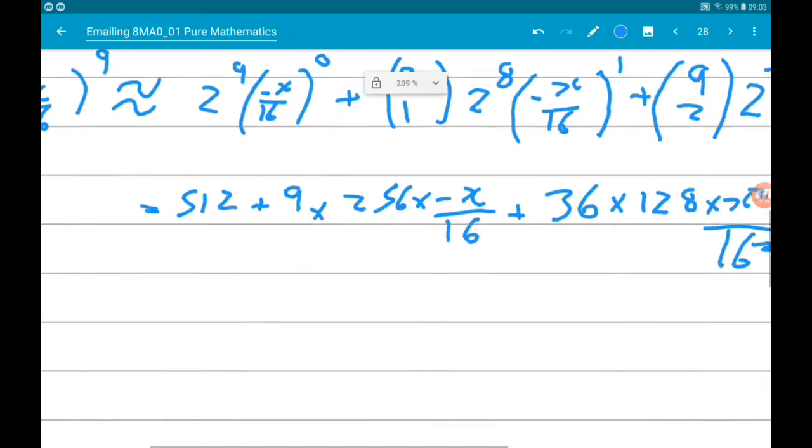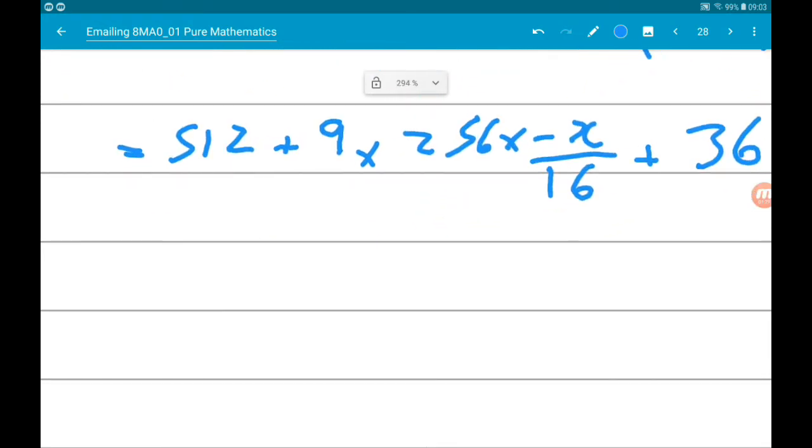Get your calculator involved, and you will get 512 minus 144x add 18x squared.